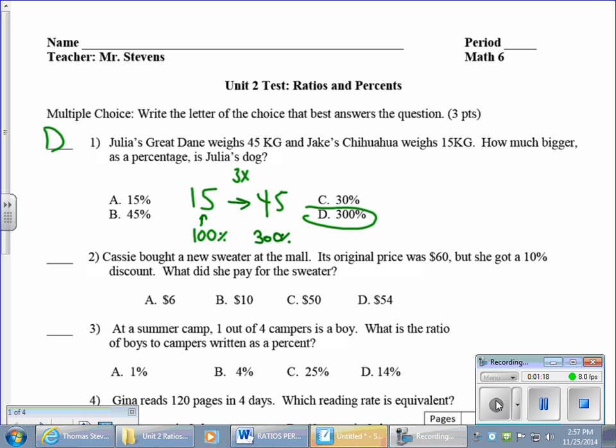Second question, also from BrainPop: $60 sweater, 10% discount. Divide by 10, there's your discount. $6 off, not $6 cost. The price is $54.